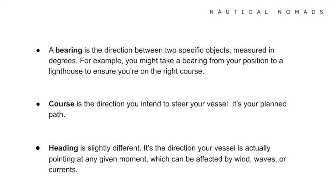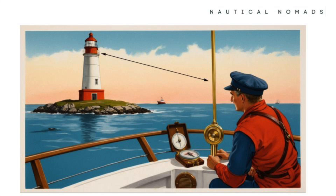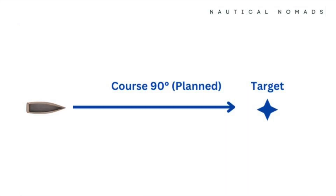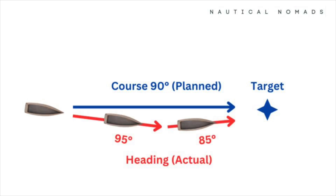Let's look at the different types of direction you'll encounter as a navigator. While cardinal points are a good starting point, they're not precise enough for most practical purposes. This is where terms like bearing, course, and heading come into play. A bearing is the direction between two specific objects, measured in degrees — for example, you might take a bearing from your position to a lighthouse. Course is the direction you intend to steer your vessel; it's your planned path.